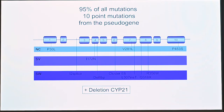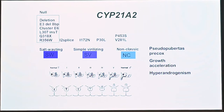This enables us to make genotype-phenotype correlations. There are actually 10 point mutations and deletions that make up more than 95% of all the mutations we have. This makes it possible to correlate clinical symptoms with the severity of the gene mutation.